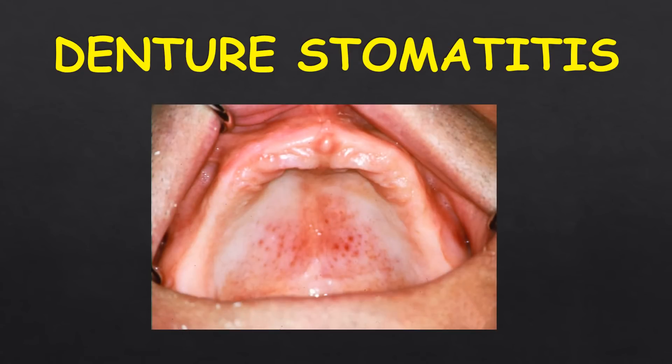We have already discussed the sequelae of wearing complete dentures in the previous lectures. Denture dermatitis is a direct sequelae of wearing a complete denture — it is a pathological reaction of the denture-bearing mucosa. It is also known as denture-induced dermatitis, denture sore mouth, inflammatory papillary hyperplasia, or chronic atrophic candidiasis. It is characterized by inflammation of the palate with erythema limited in outline by the fitting surface of the denture, and the patient is often unaware of the condition because it is usually painless.